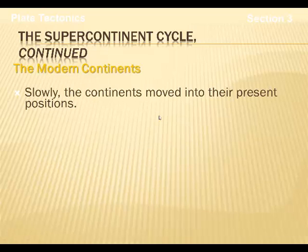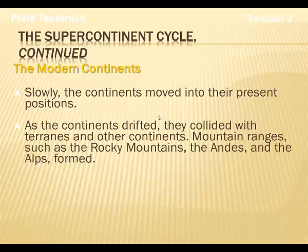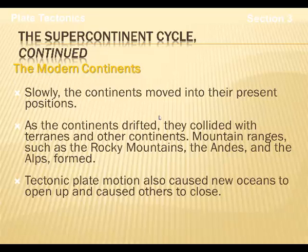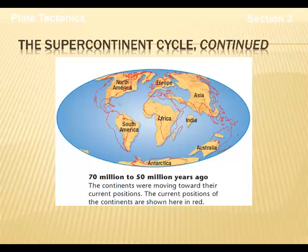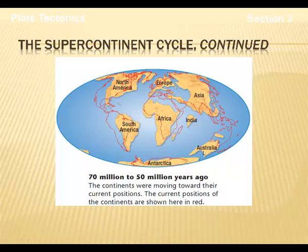The modern continents. Scientists think that slowly the continents moved into their present positions. As the continents drifted, they collided with terrains of other continents, and mountain ranges like the Rocky Mountains, the Andes, and the Alps all started to form. The motion also created new oceans and would close oceans as continents moved closer to one another. Scientists think the continents were slowly drifting apart 70 to 50 million years ago — Africa rotated slightly, Europe and Asia came back together, and Australia continued to drift northward.